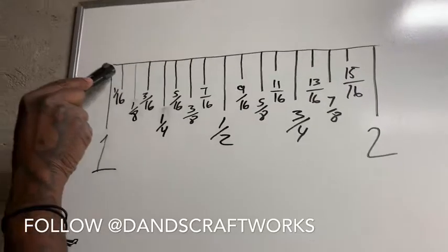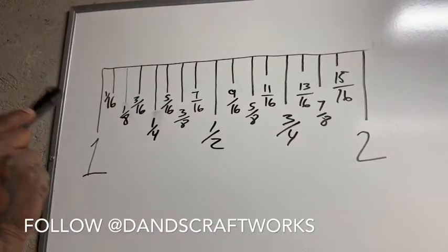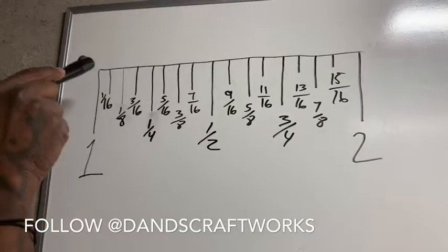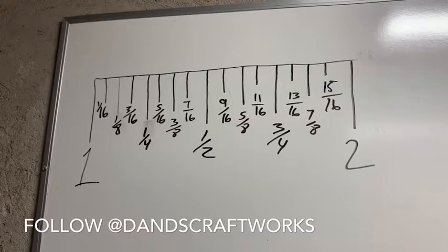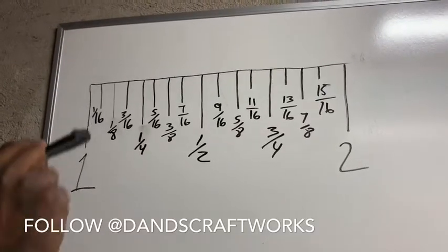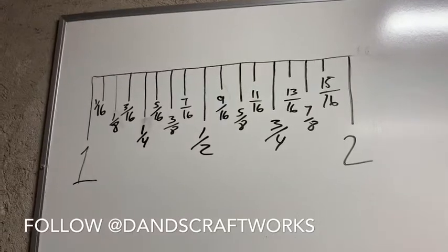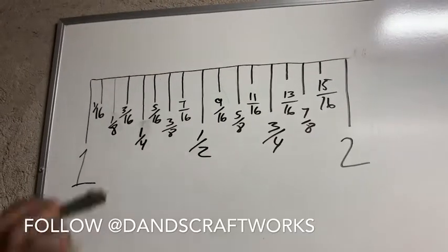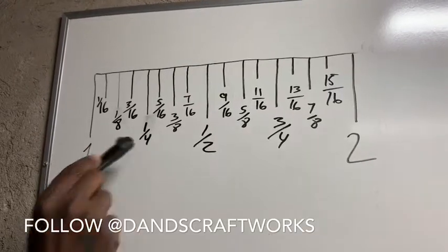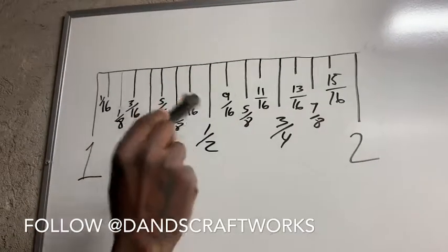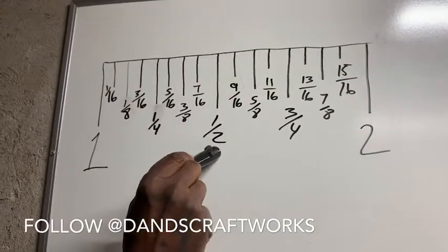Your shortest ticker marks will always be a sixteenth of an inch. Remember that your shortest line will always be a sixteenth of an inch. Your second shortest ticker marks will always be one-eighth of an inch. Your third shortest ticker marks will always be quarters. And your longest ticker marks between an inch will always be one-half.